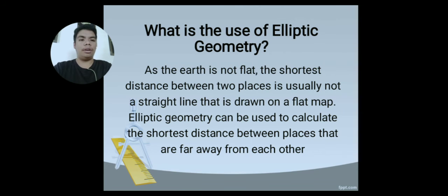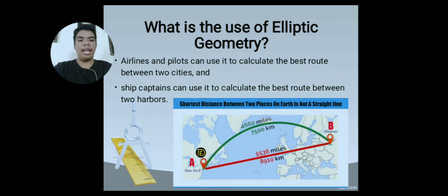What is the use of elliptic geometry? As the Earth is not flat, the shortest distance between two places is usually not a straight line that is drawn on a flat map. Elliptic geometry can be used to calculate the shortest distance between places that are far away from each other. Airlines and pilots can use it to calculate the best route between two cities, and ship captains can use it to calculate the best route between two harbors.